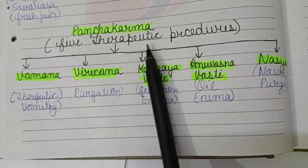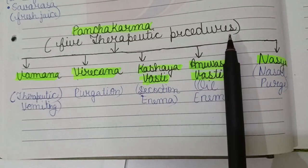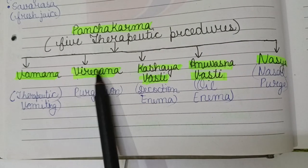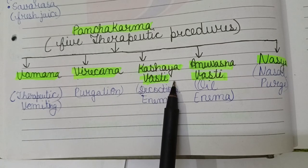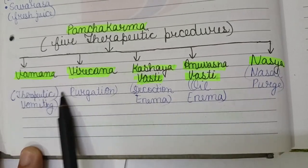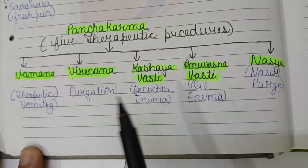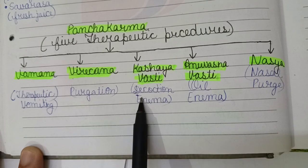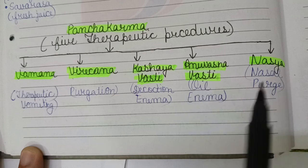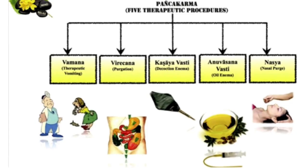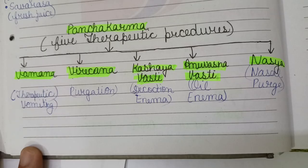Panchakarma refers to five therapeutic procedures used for different diseases. These are: Vamana (therapeutic vomiting), Virechana (purgation), Kashaya Vasti (decoction enema), Anuvasana Vasti (oil enema), and Nasya (nasal purge). These are the five therapeutic procedures used for different diseases.